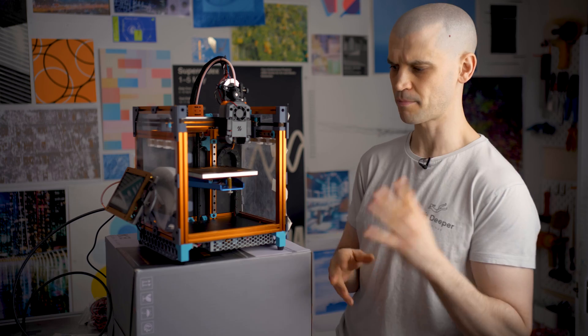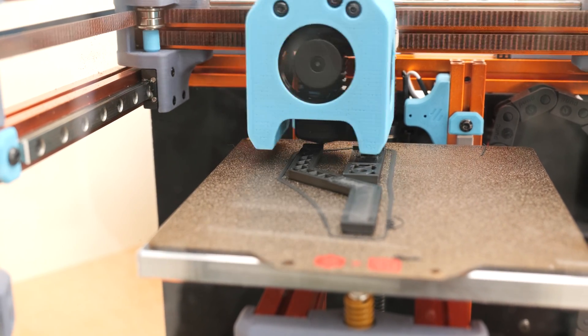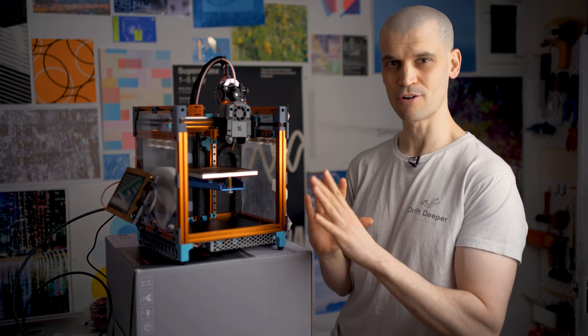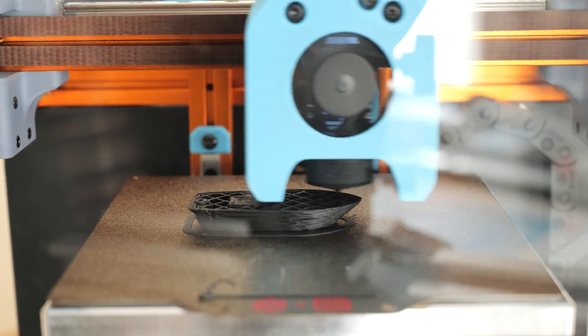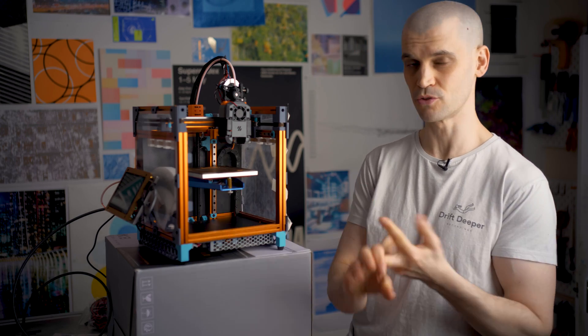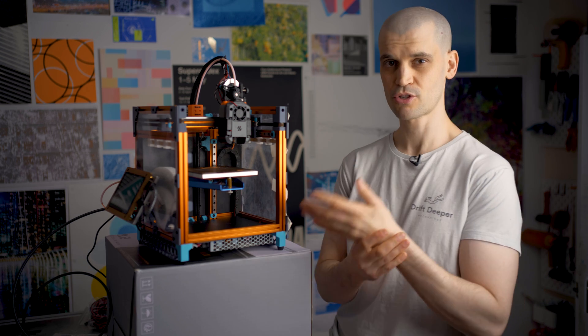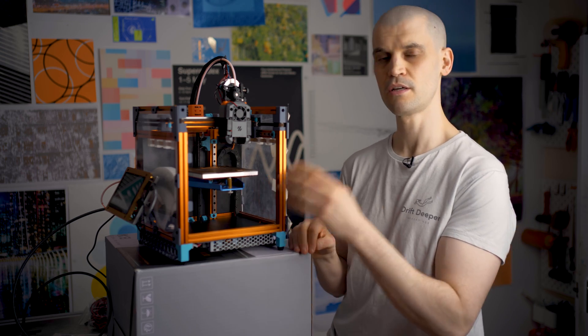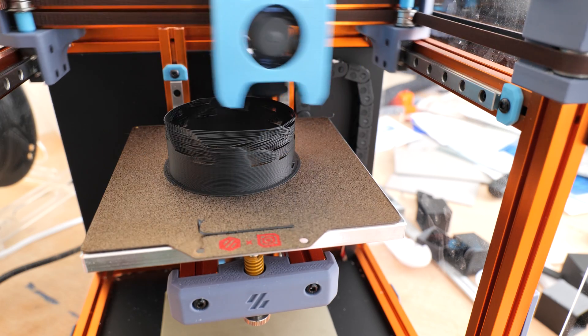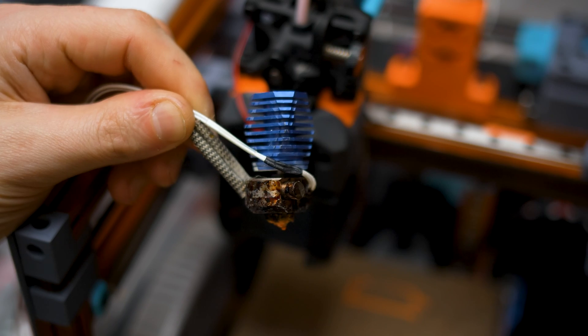I did a video a few years back about the realistic speeds that you can expect from a stock Voron 0.1. Basically I was topping out at around 120 to 150 millimeters per second with a 0.4 millimeter nozzle with a 0.3 millimeter layer height. I'm always trying to push more speed out of this. The bottlenecks that we come across with the stock setup was the cooling and also the flow rate of the Dragonfly BMO hotend.